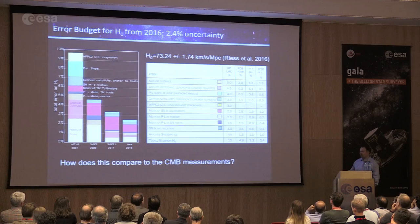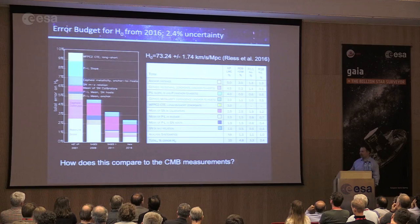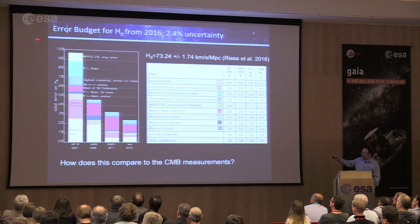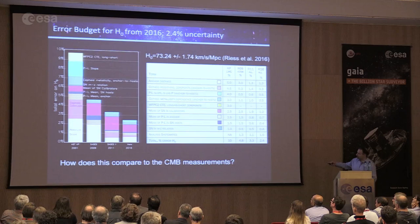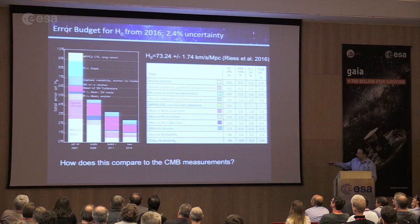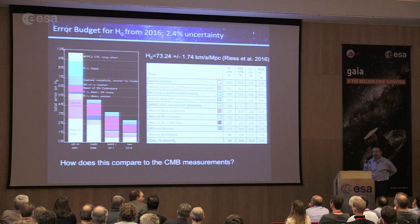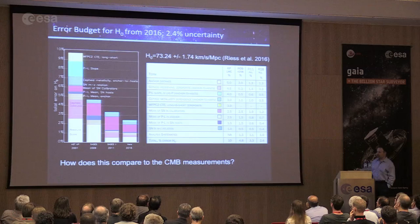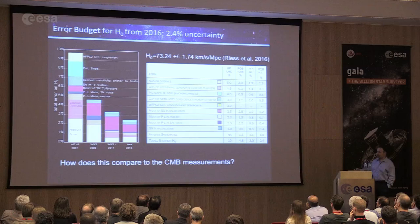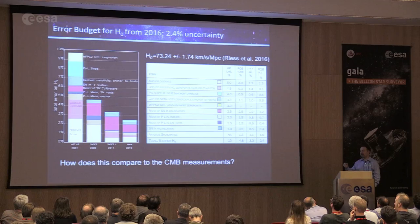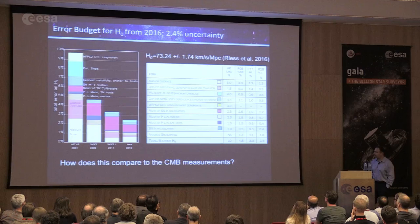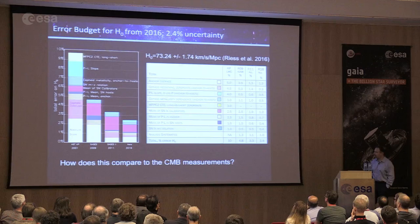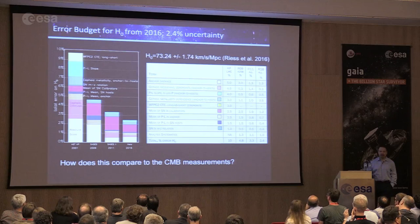We've been at this for a number of years — this is our DR3 if you like. The old Hubble Key Project got uncertainty down to 10% using WFPC2. We got it to 5% in our first result, then 3%, now 2.4%. We hope to move ahead to a DR4 or DR5. The two largest remaining uncertainty terms are the anchor distance — the geometric scale, which Gaia would dramatically improve — and the number of Rosetta stone galaxies, where we have 19 and want to add more.